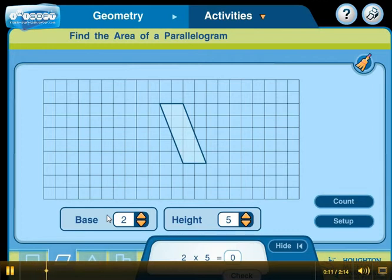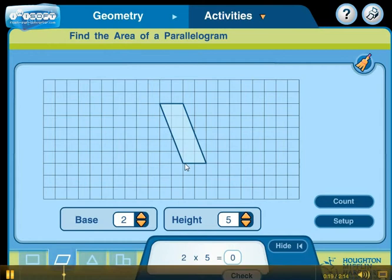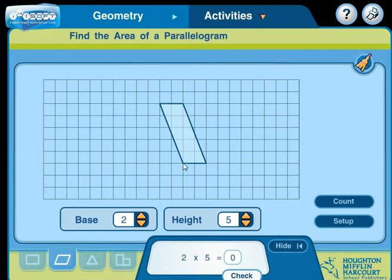We're going to use the parallelogram that we see here on the board or on the display, and let's talk about its dimensions. The base is 2, 1, 2, and the height of this is 5. Now remember, the height has to be perpendicular to the base, meaning that it forms a right angle, so let's see why it's 5.